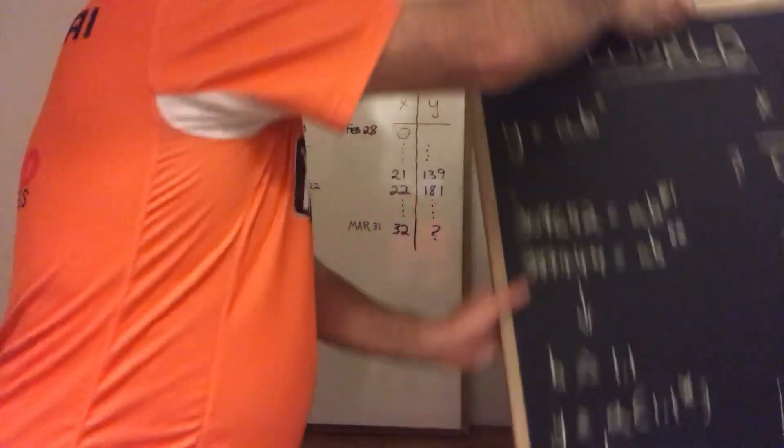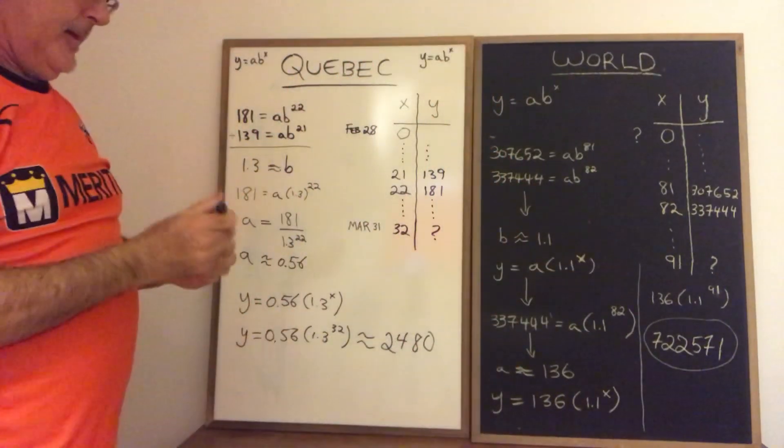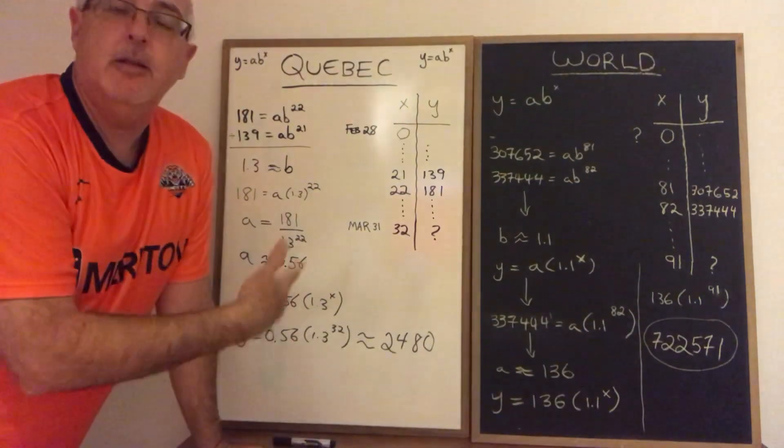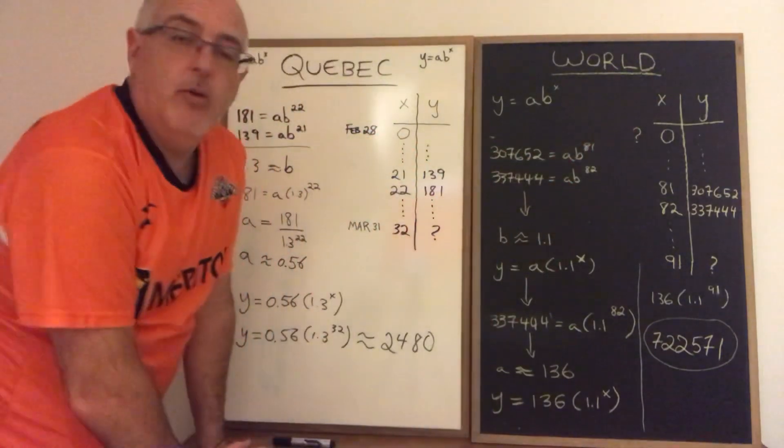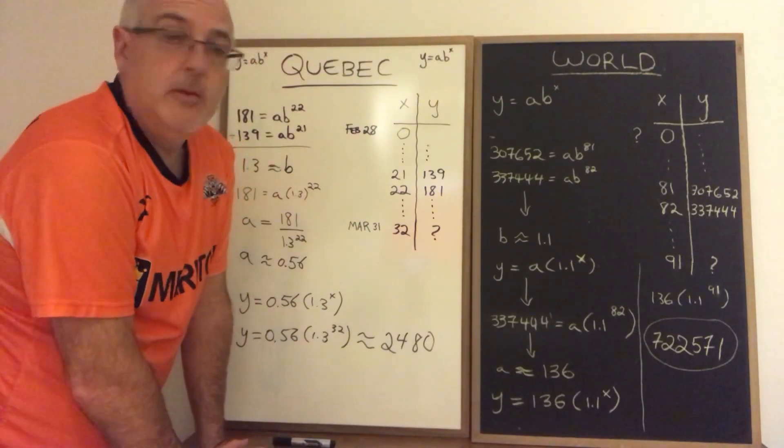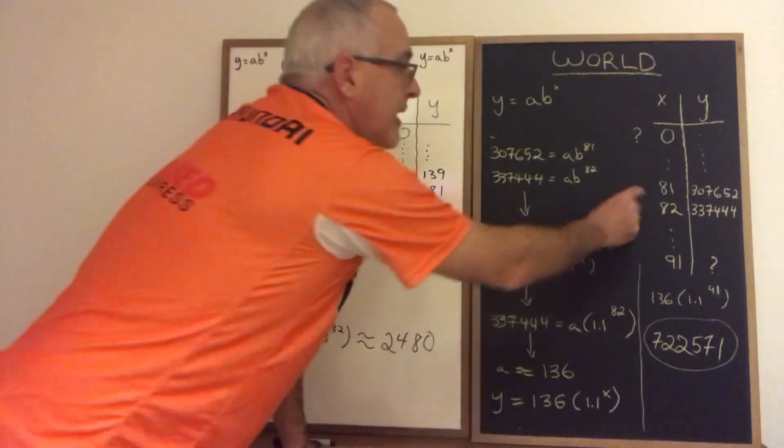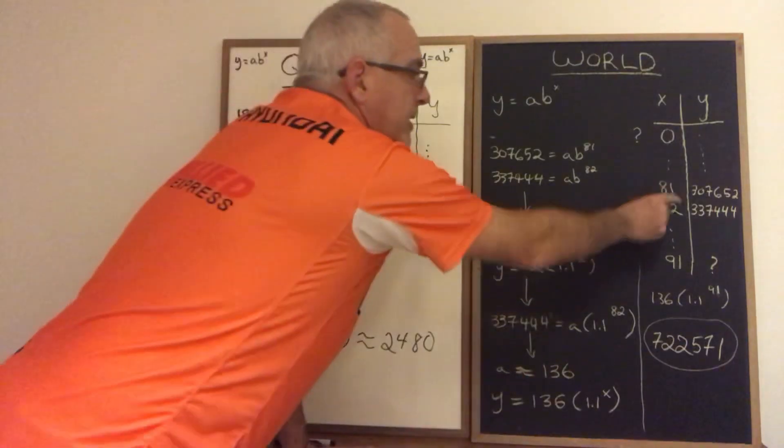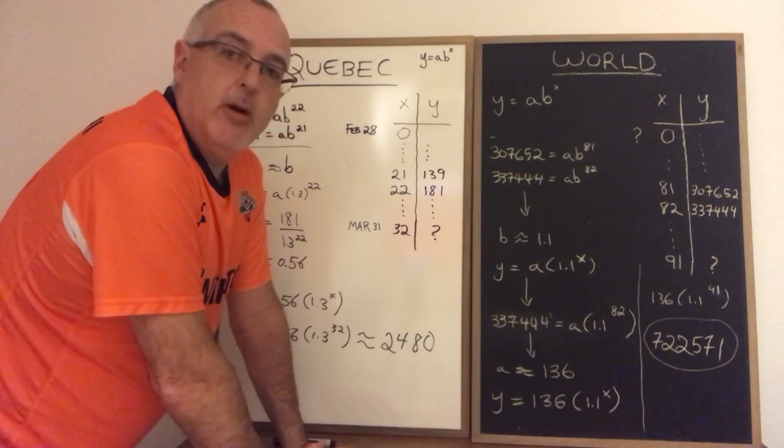I did this again for the world. The data is a little different because I got the data this time from a website that updates the number of world confirmed cases every day. And I have no idea when day zero really was. It was sometime in December. I chose to make January 1st my day zero just so that I could build my table of values. By doing that I ended up with day 81 and day 82. That's yesterday and the day before again. And the values were 307,652 and 337,444.